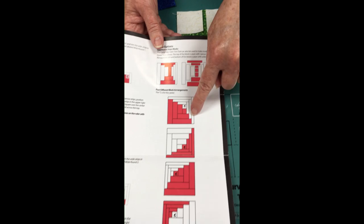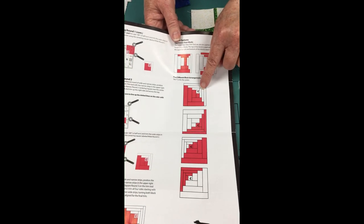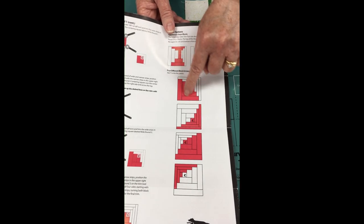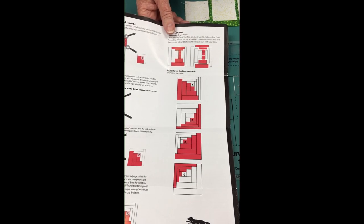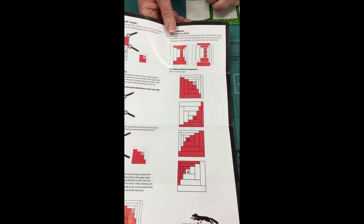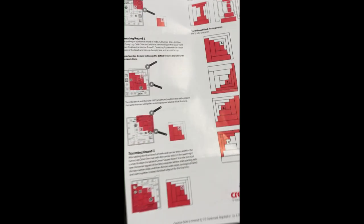The illusion of the curve is created by having skinny logs on two sides of the log cabin and wide logs on two sides. It's all a matter of how you place your lights and darks to get different looks.